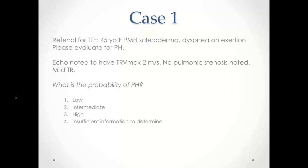Here is a brief case example: a referral for TTE for a 45-year-old female with past medical history of scleroderma presenting with vague dyspnea on exertion. The request is to evaluate for pulmonary hypertension. The echo shows a TRV max of 2 meters per second, no pulmonic stenosis noted, and only mild TR. The question is: what is the probability of pulmonary hypertension — low, intermediate, high, or insufficient information to determine?